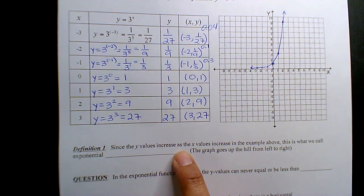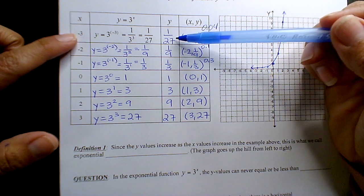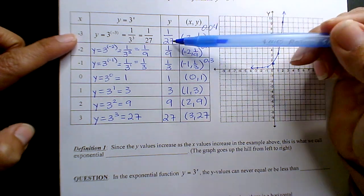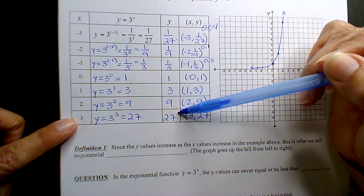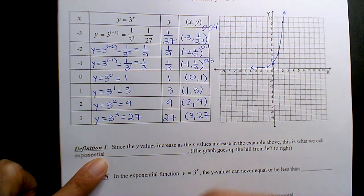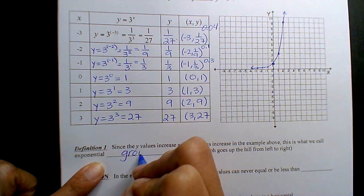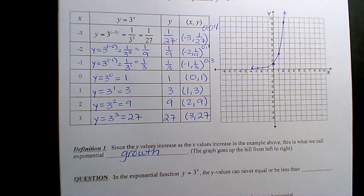Since the y values increase as the x values increase - meaning when x was negative we got a fractional or decimal answer, as the values became more positive the numbers became also more positive, larger - this is what we call an exponential growth function. It's like bacteria.